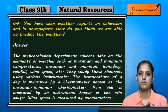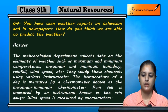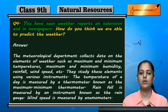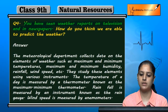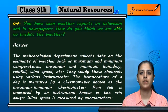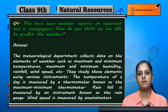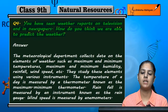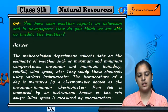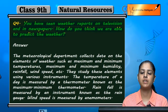Question 4: You have seen weather reports on television and in newspapers. How do you think we are able to predict the weather? Weather can be predicted — today's weather, tomorrow's weather, one week's weather. It can be told that today's weather will be enough for the night, the next day, and the day after tomorrow. So how do you make all these predictions?